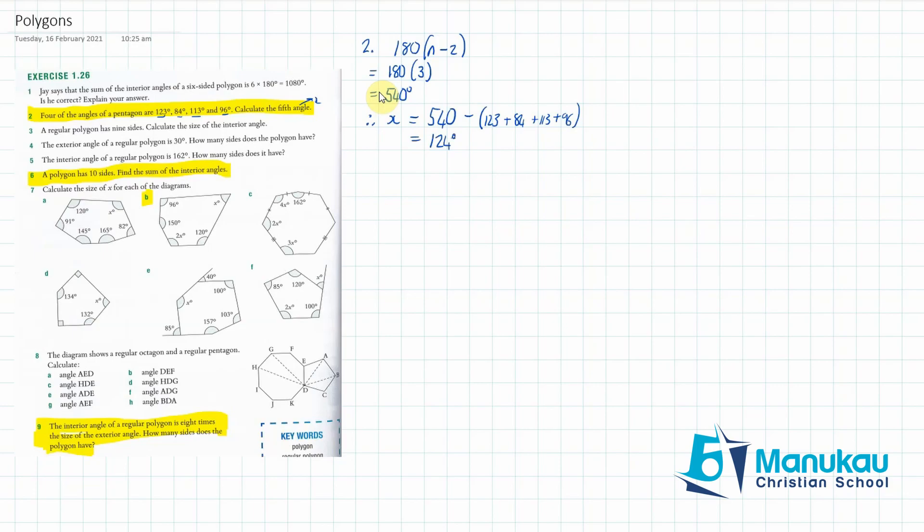Okay, now let's move on to number 6 here. Polygon has 10 sides calculate the sum of the interior angles. Now, we know that the sum of the interior angles is 180 degrees times n minus 2. In this case, we have a 10-sided polygon, so it's going to be 10 take away 2 in the bracket, so that ends up being 8. And when we chuck that into our calculators, we're going to get 1440 degrees.